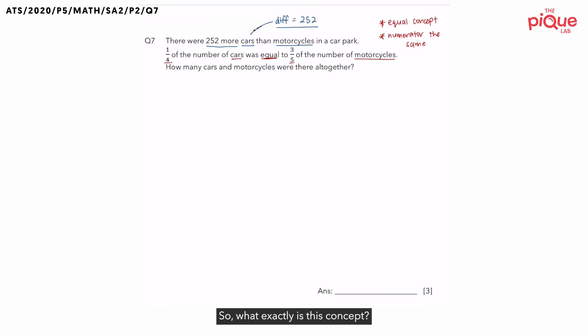So what exactly is this concept? Now, whenever we see that one fraction of something, which in this case are cars, is equal to another fraction of another item, which in this case would be motorcycles, this is what we are going to do. Because these two fractions are equal, we are going to come up with an equation. So one quarter of the cars is equal to three-fifths of the motorcycles. C for cars, M for motorcycles. Okay?